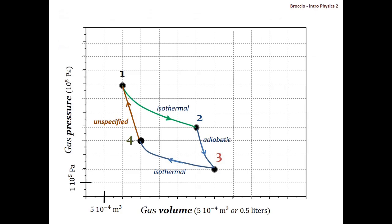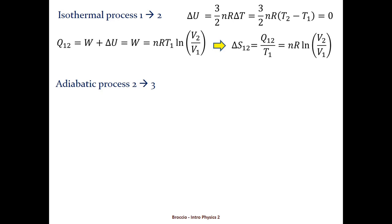Now for the process from 2 to 3, it's adiabatic which means no heat exchange. So the entropy will be the sum of the entropies for each piece of this process, but each piece has zero heat exchange. It's a summation of zeros so the answer is zero. In other words, entropy is constant, which is a general result for any adiabatic process.